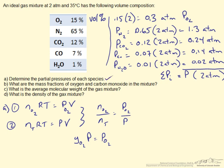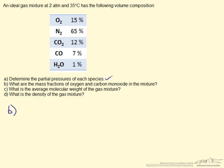Part B asks us to find the mass fraction of oxygen and carbon monoxide in the mixture. As we're given mole percents or volume percents, we need to convert these to a mass percent, or mass fraction. To do this, we're going to pick a basis. We're going to say that this entire gas mixture is going to be 1 mole total.